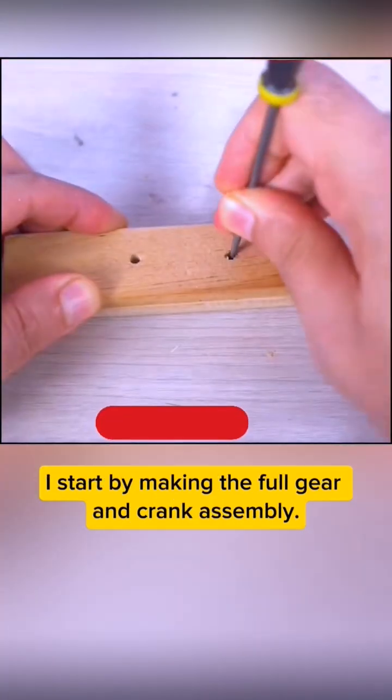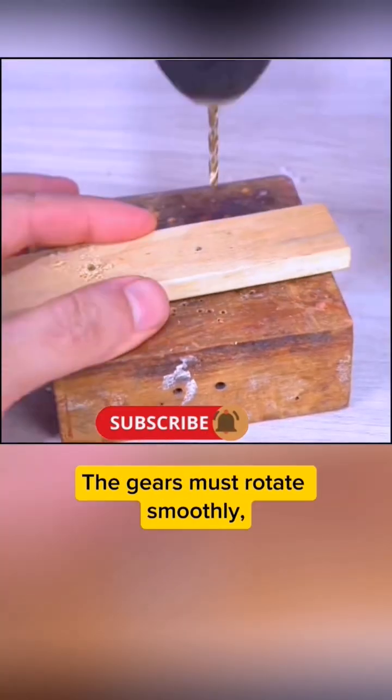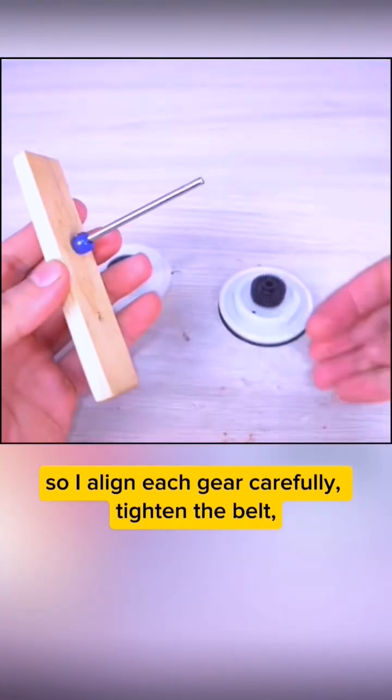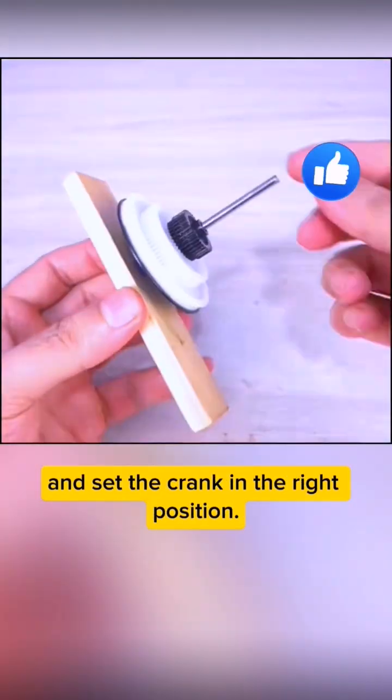I start by making the full gear and crank assembly. The gears must rotate smoothly, so I align each gear carefully, tighten the belt, and set the crank in the right position.